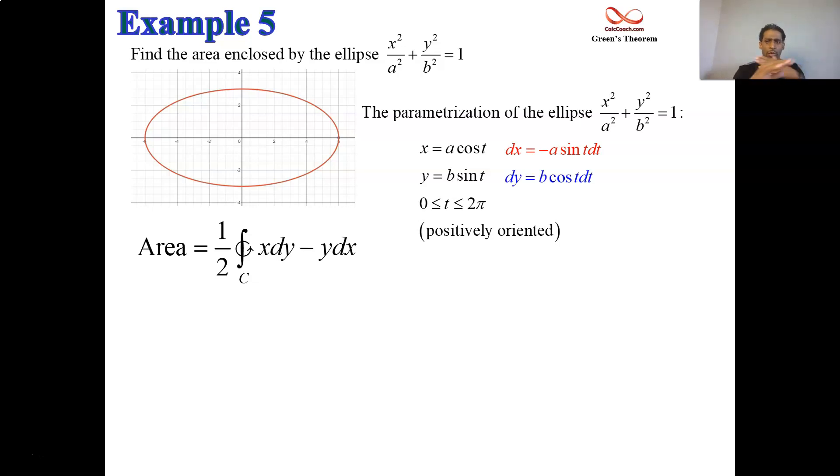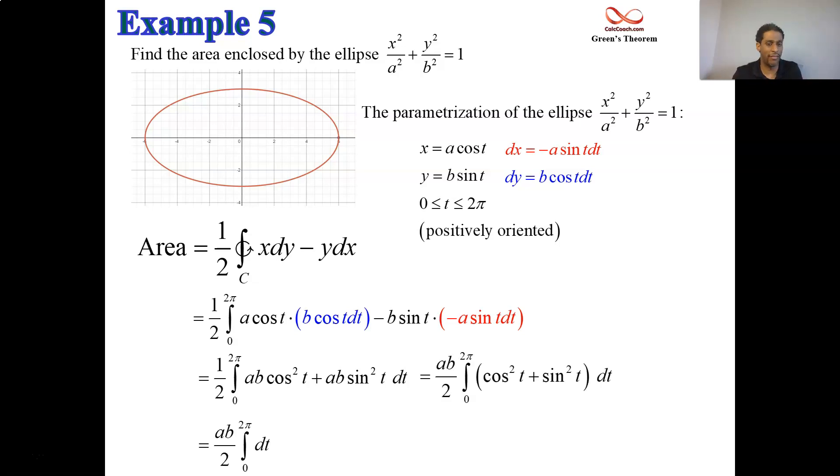And so then what we're going to do is multiply x times dy and subtract y times dx. The double minus there makes it a plus. You'll have ab cosine squared plus ab sine squared. Factor out the ab. Let's take it all the way out. And cosine squared plus sine squared is a one. You're just integrating one from zero to two pi. That's just two pi. Cancel the twos. The area of an ellipse in standard format with the a underneath the x and the b underneath the y is just pi ab. All right, that's great.